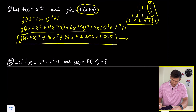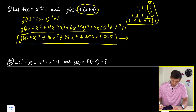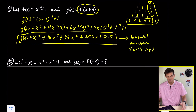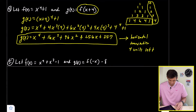That entire expanded polynomial came from just a horizontal translation four units to the left. It's remarkable how drastically a simple horizontal shift can change the look of a polynomial.